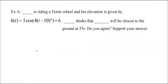So let's test this out. Okay, so let's do example A. Matthew is riding a ferris wheel, and his elevation is given by this formula. Brahm thinks that Matt will be closest to the ground at 55 seconds, and so we're supposed to agree or disagree and support our answer.